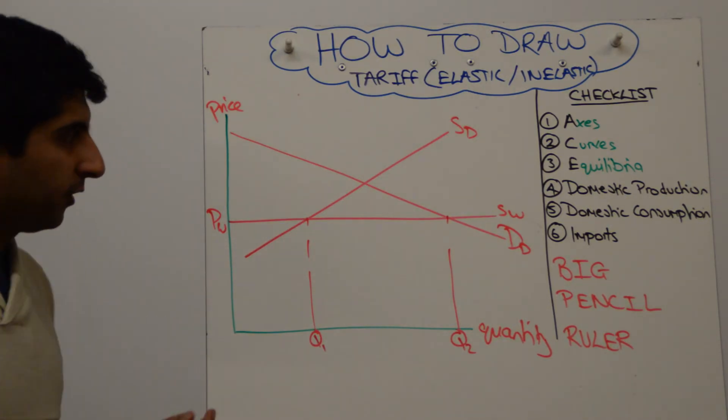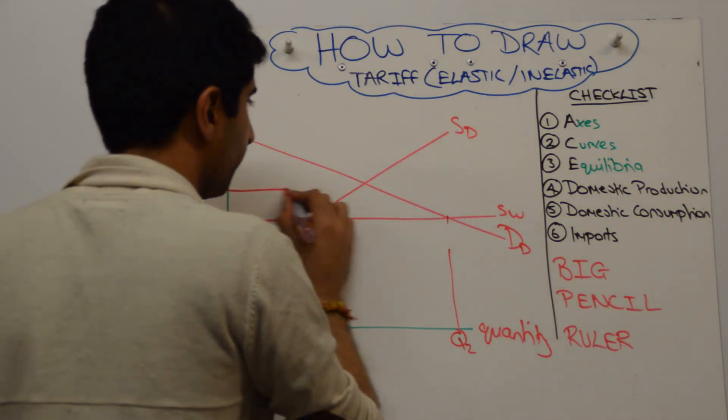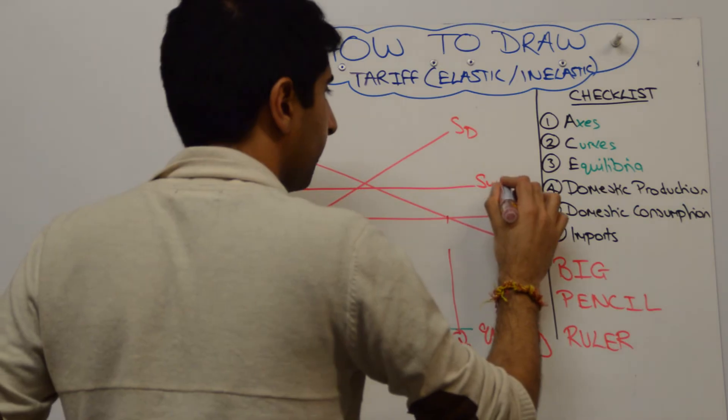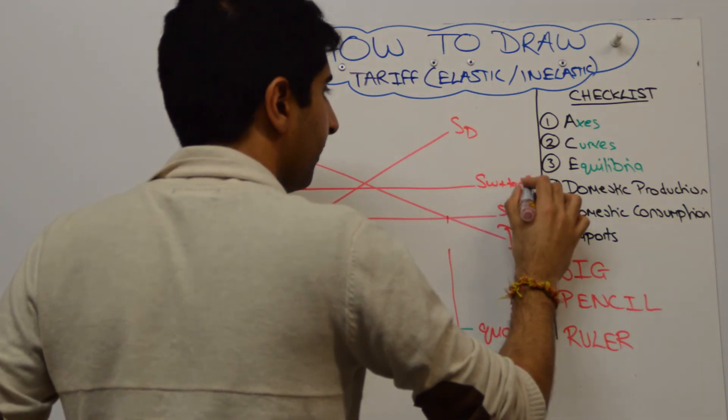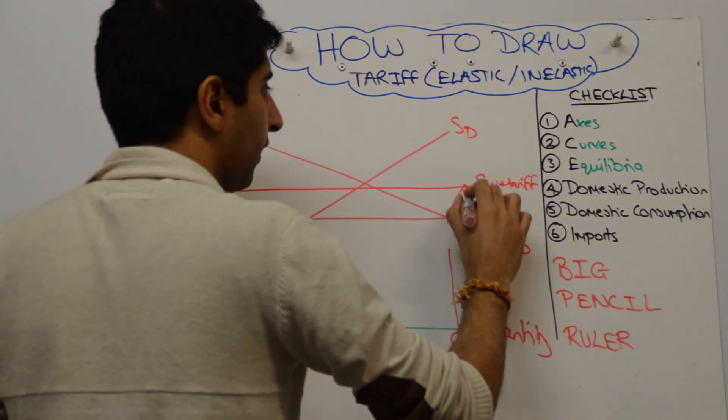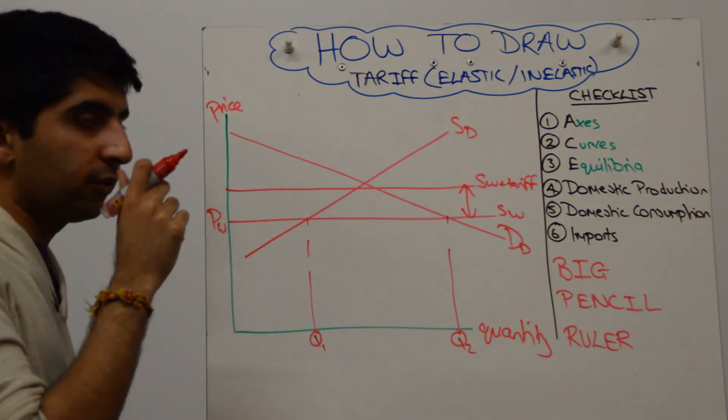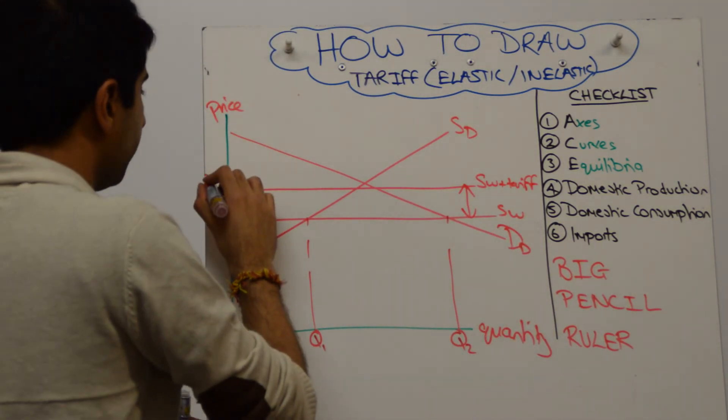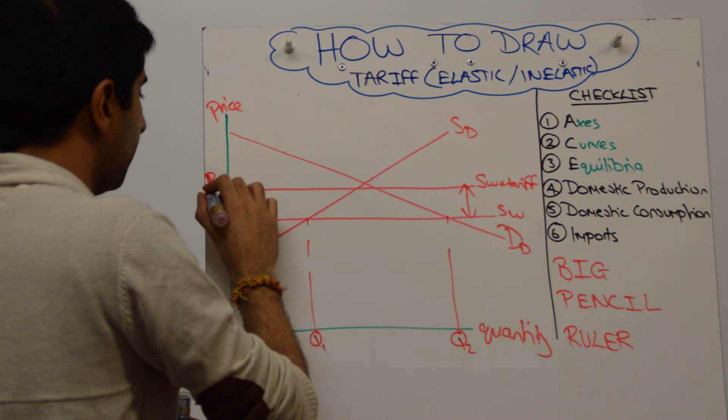We now want to shift this curve upwards to show the impact of the tariff. Let's do that. And we'll call that supply W plus tariff. And as a result of this extra cost of importing, the price goes up to Pw plus T.